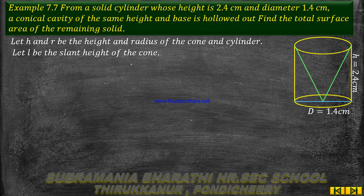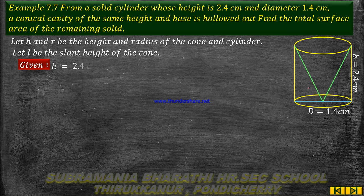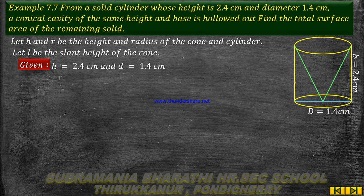Let l be the slant height of the cone. So l is equal to square root of h squared plus r squared. Given: h = 2.4 cm, diameter = 1.4 cm, so radius = 0.7 cm because radius is equal to half of the diameter.